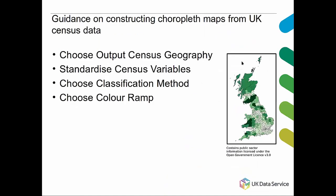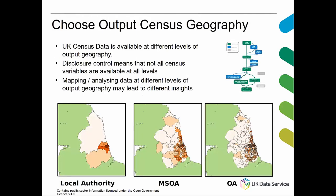When creating choropleth maps, there's specific guidance which can help you in this process. You need to choose the correct output census geography — remember that census variables are available at different levels of geography. You have to standardize your census variables, choose an appropriate classification method, and then choose the color ramp to describe the data. In choosing the output census geography, you have to pick what you think is most appropriate for your data.